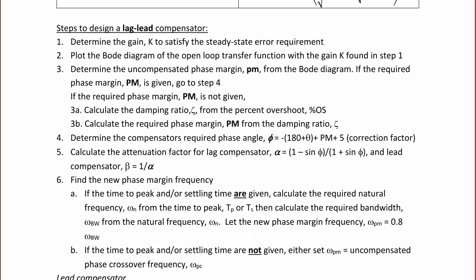Steps to design a lag-lead compensator. Step 1: Determine the gain K to satisfy the steady-state error requirement. Step 2: Plot the Bode diagram of the open-loop transfer function with K from step 1. Step 3: Determine the uncompensated phase margin from the Bode diagram. If the required phase margin is given, proceed to step 4; if not, calculate the damping ratio from the percent overshoot and then calculate the required phase margin. Step 4: Determine the compensator's required phase angle phi equal to negative (180 plus theta plus required phase margin plus 5).